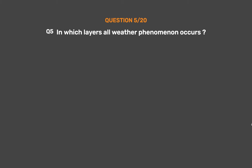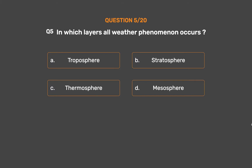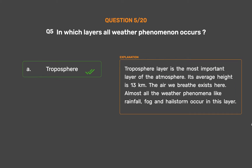Question number 5: In which layer do all weather phenomena occur? Option A: Troposphere. Option B: Stratosphere. Option C: Thermosphere. Option D: Mesosphere. The correct answer is Option A, Troposphere. Troposphere is the most important layer of the atmosphere. Its average height is 13 kilometers. The air we breathe exists here. Almost all weather phenomena like rainfall, fog, and hailstorm occur in this layer.